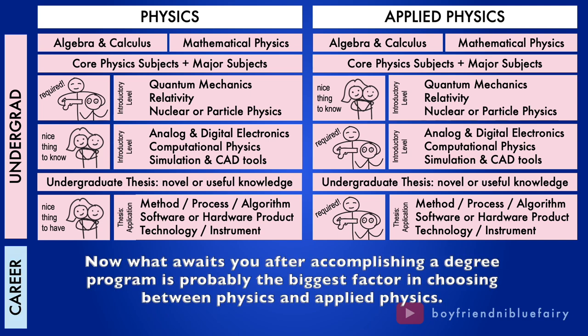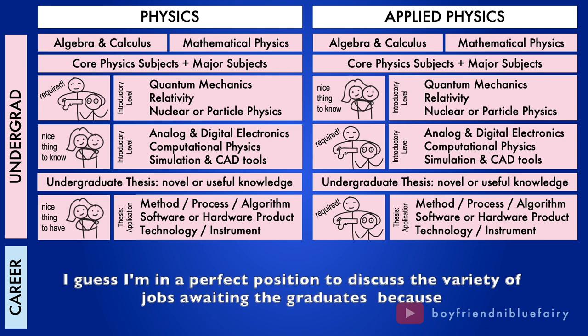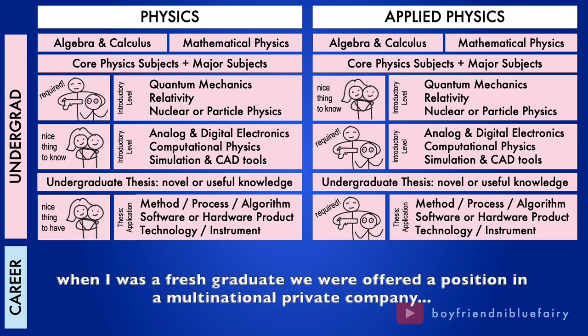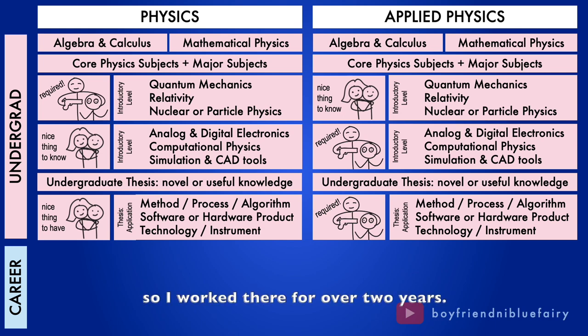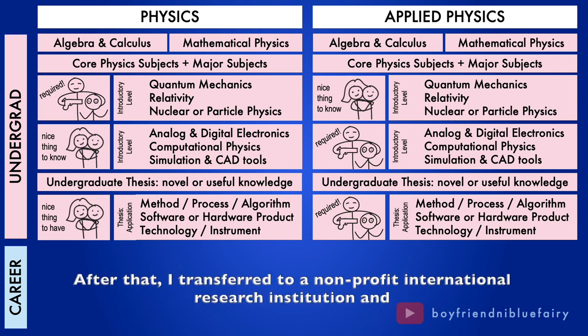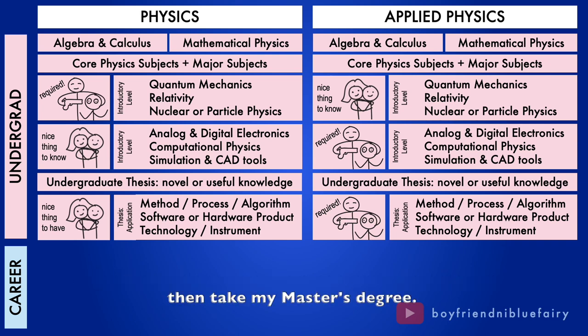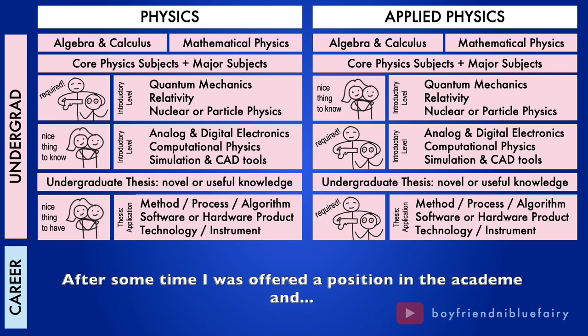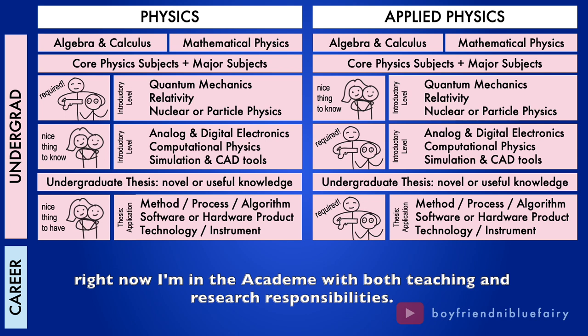Now, what awaits you after accomplishing a degree program is probably the biggest factor in choosing between physics and applied physics. I guess I'm in a perfect position to discuss the variety of jobs awaiting the graduates because when I was a fresh graduate, we were offered a position in a multinational private company. So I worked there for over two years. After that, I transferred to a non-profit international research institution and then take my master's degree. After some time, I was offered a position in the academe and right now I'm in the academe with both teaching and research responsibilities.